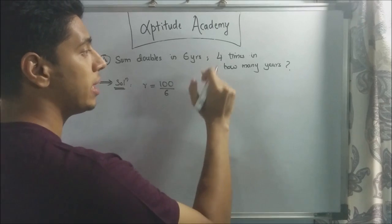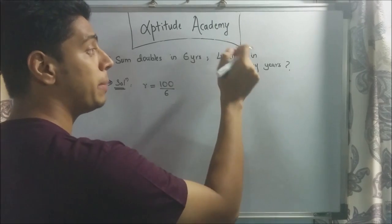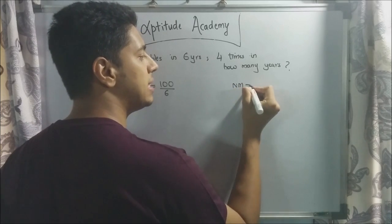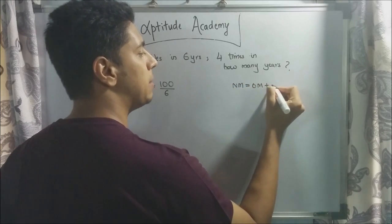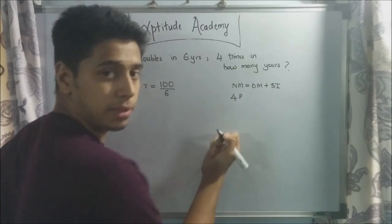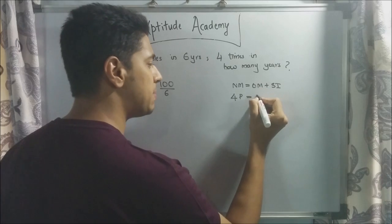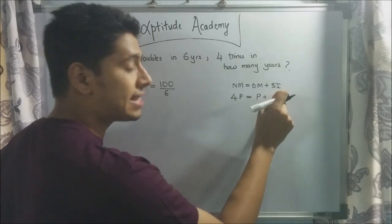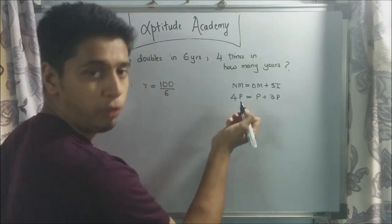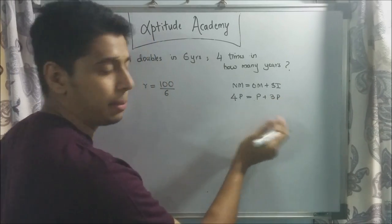You need to find out in how many years will it become 4 times the original amount. Similarly, how we said new money is equal to old money plus simple interest. We now know that new money is 4 times the principal. Old money is always principle. So what should the SI be? SI will be 1P plus 3P. Obviously. Because 1P plus 3P will become 4P. We know SI is 3P.